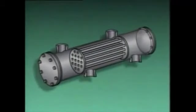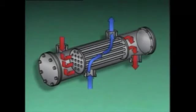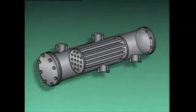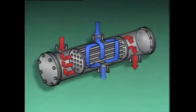In a parallel flow heat exchanger, the shell side fluid and the tube side fluid move in the same direction. In this heat exchanger, the tube side fluid passes through the tubes in this direction, and the shell side fluid passes around the tubes in the same direction. In a cross flow heat exchanger, the fluids flow perpendicular to each other. The tube side fluid enters through this inlet, flows through the tubes, and exits through this outlet. The shell side fluid enters the shell through this inlet, flows across the tubes, and leaves the shell through this outlet.